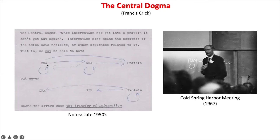What the central dogma basically says is that information is stored in a molecule called DNA. In the 1950s, it was not very clear where information was stored — even into the early 1930s, there were people who believed that proteins were the repository of genetic information. Today we know that information is genetic and stored in DNA. From DNA, information is transferred to protein, though at that time it was not very clear how this would happen — whether directly or through an intermediate.